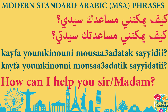Now let's say it in feminine. كيف يمكنني — 'how can I?' — stays the same. مساعدتك for feminine. The masculine was مساعدتك, the feminine is مساعدتك.